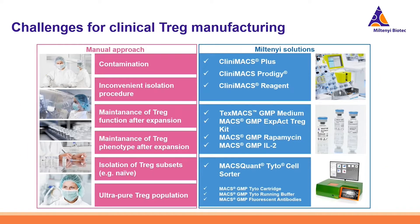The manufacturing of clinical T-regs is a challenging task with different steps to consider. The first step is isolation, which must be contamination-free. T-regs are usually needed in an ultra-pure state for effective treatment, and the maintenance of cells in culture is also fundamental. Miltenyi Biotech can provide solutions for all of these pain points, with platforms for isolation on the CliniMACS Plus, CliniMACS Prodigy, and MaxQuantito cell sorter, as well as reagents for cell culture.